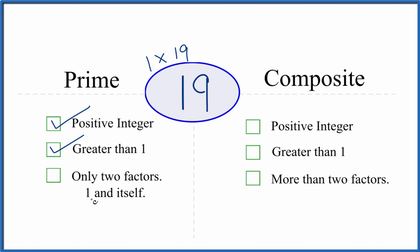So there are only two factors, 1 and 19. So 19, it's a prime number.